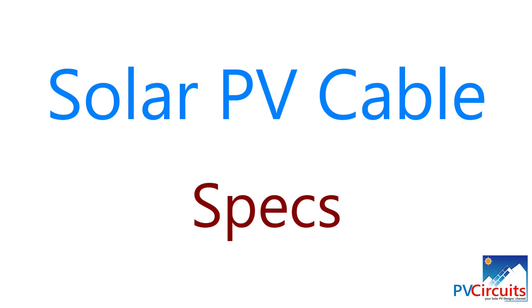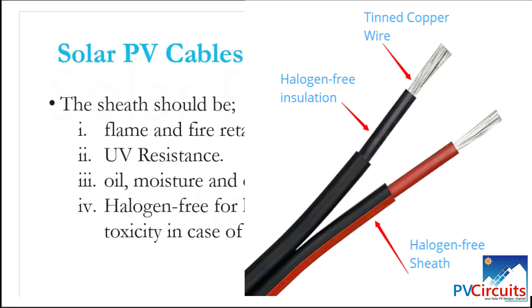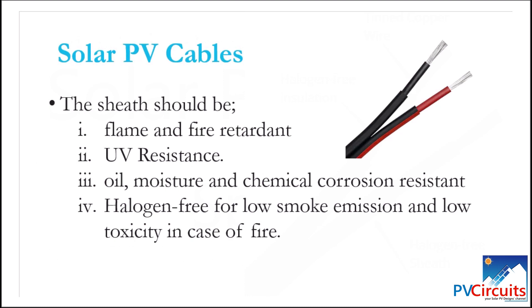The specifications for the solar PV cables should be such that the sheath should be flame and fire retardant, it should also be UV resistant, it should be oil, moisture, and chemical corrosion resistant, and the sheath should also be halogen free for low smoke emission and low toxicity in case of fire.